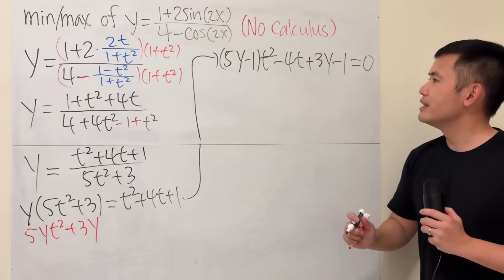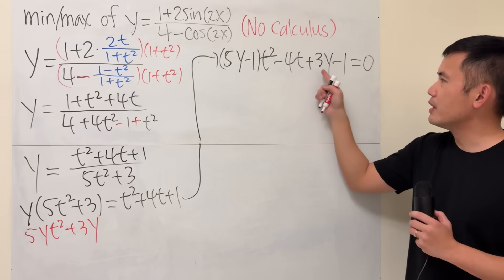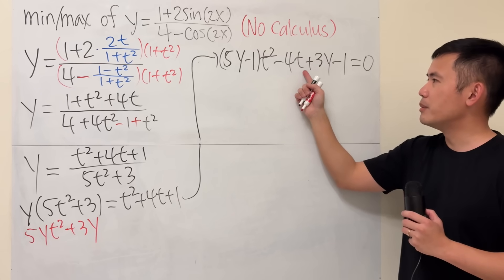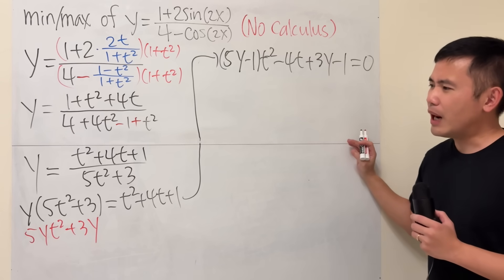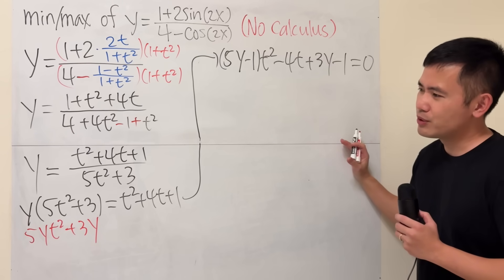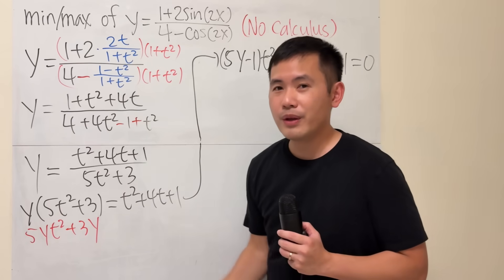Now, have a look. This is just going to be a quadratic equation in terms of t. Very nice, right? But we still have to think about how exactly can this help us to find the minimum and the maximum for this, though. Well,